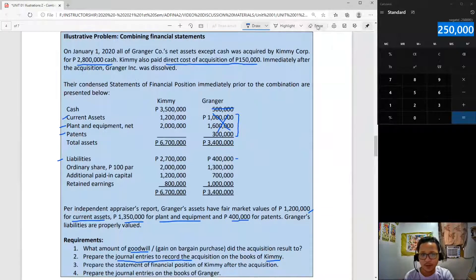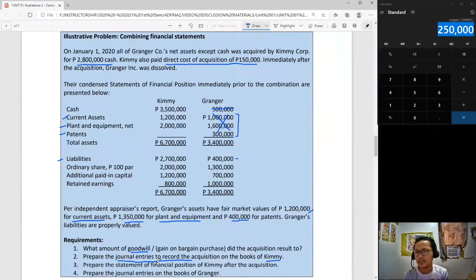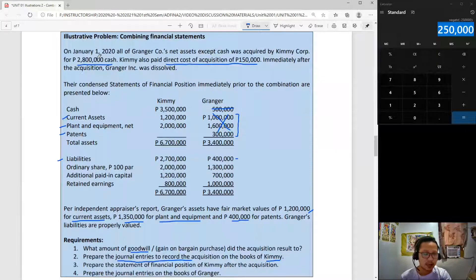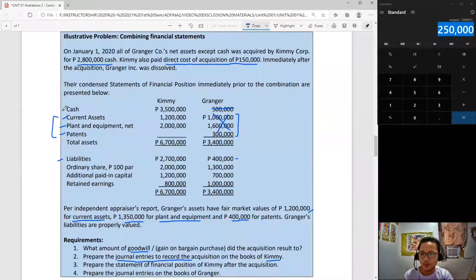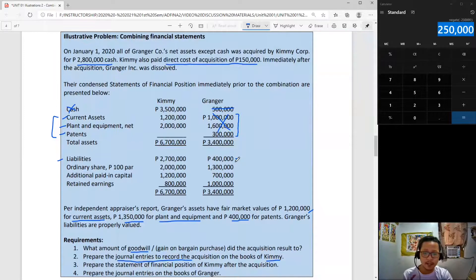For the next requirement, you are simply required to prepare the journal entries to record the acquisition. The entry under Kimi Corporation has a credit to cash of 2,800,000 because you purchased the assets and liabilities. You will debit all the assets you acquired - cash is excluded - and credit the liabilities assumed. We will not be using book values but the values presented. There is a credit to cash of 2,800,000, debit for current assets of 1,200,000.